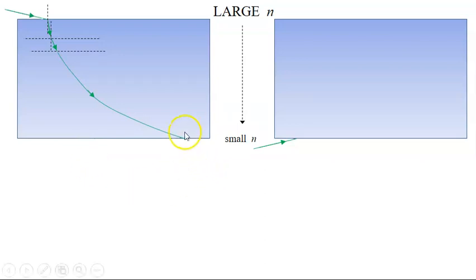But it doesn't stop there. It keeps going. Now it's going to exit into the air, and so now it's going from a small index of refraction to the air. But we don't even have to think about it. We know what's going to happen. If here it started in air, goes through all of this, and ends in air, well, we've already done a problem like this. We know what happens.